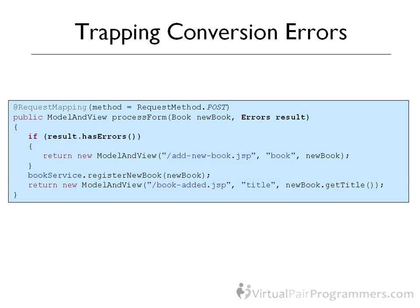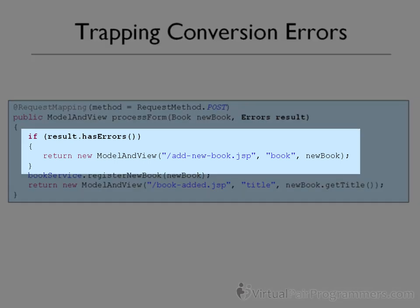Armed with this, we can then programmatically check if there were any errors via the hasErrors method. If that returns true, then we can go back to the form page - that's the re-presentation. And by passing across the book object, any good values that we entered will be re-presented.